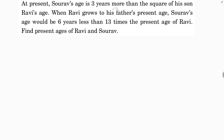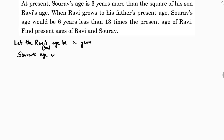At present, Saurav's age is 3 years more than the square of his son Ravi's age. When Ravi grows to his father's present age, Saurav's age would be 6 years less than 13 times the present age of Ravi. Let Ravi's age be X years. So Saurav's age will be X squared plus 3. This is the present age of Saurav.